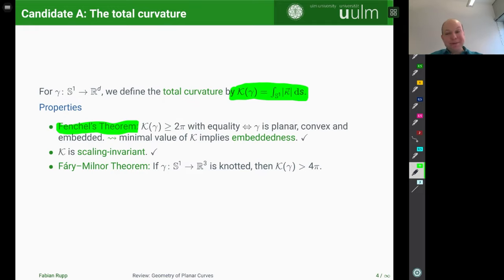Even more, we have the Fary-Milnor theorem, which gives a nice topological interpretation to this energy. Namely, if we have a knotted curve in R³, then the total curvature has to be at least strictly bigger than 4π. So this seems to be kind of a good candidate.